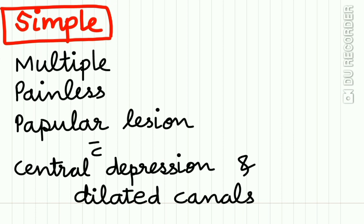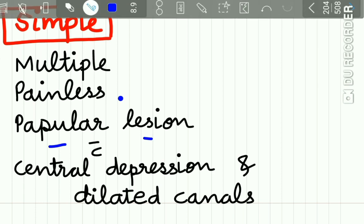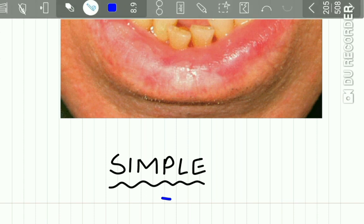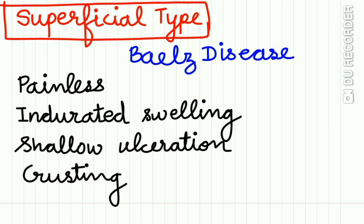The simple type of Cheilitis Glandularis is characterized by multiple painless papular lesions of the lip with central depression and dilated canals. This presents as a multiple papular surface with central depression and dilated canals.